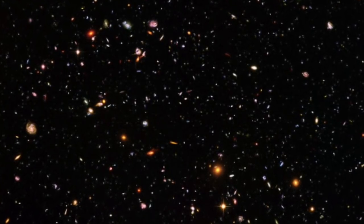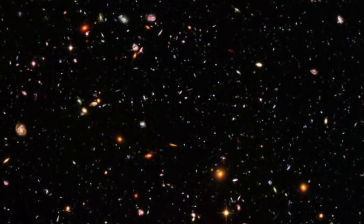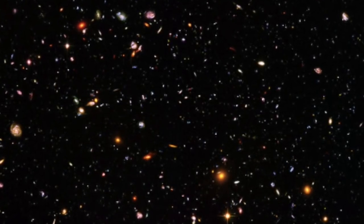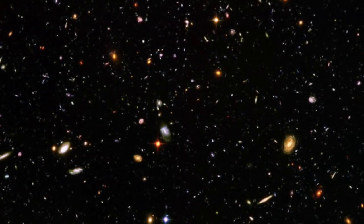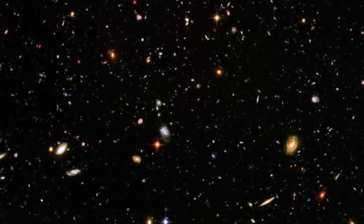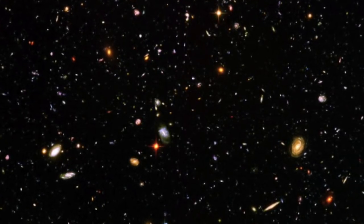A subsequent deep field picture, called the Hubble Ultra Deep Field, was taken in 2003 to 2004 after the advanced camera was installed. Within a period of 11.3 days, over 800 exposures were taken by the telescope.